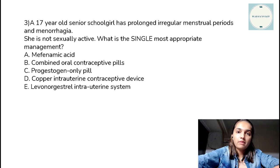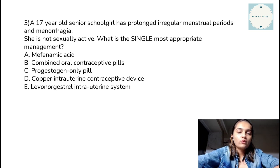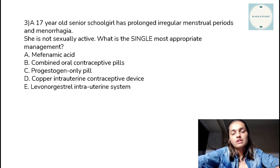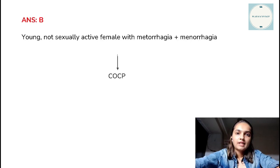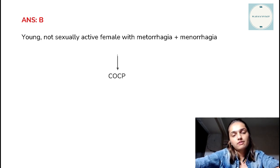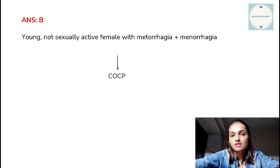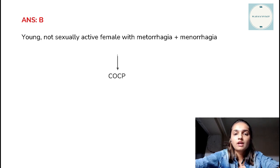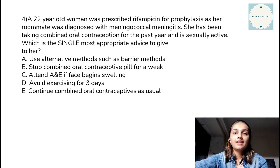Third question: a 17-year-old high school female presents with irregular menstrual cycles and menorrhagia — excessive bleeding — and is not sexually active. Key points: not sexually active — no contraception needed; irregular cycles — metrorrhagia; plus menorrhagia. Not sexually active, plus metrorrhagia, plus menorrhagia: the treatment of choice is combined oral contraceptive pills. This will help make the cycles regular and address the excessive bleeding component.